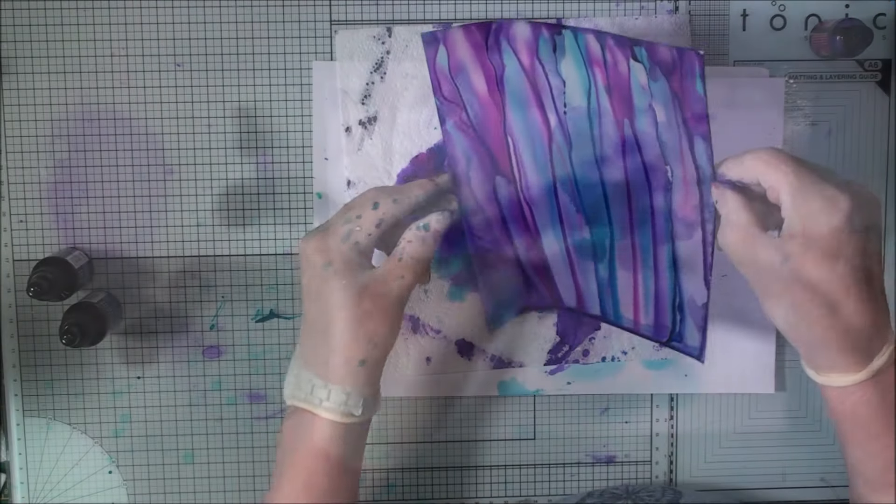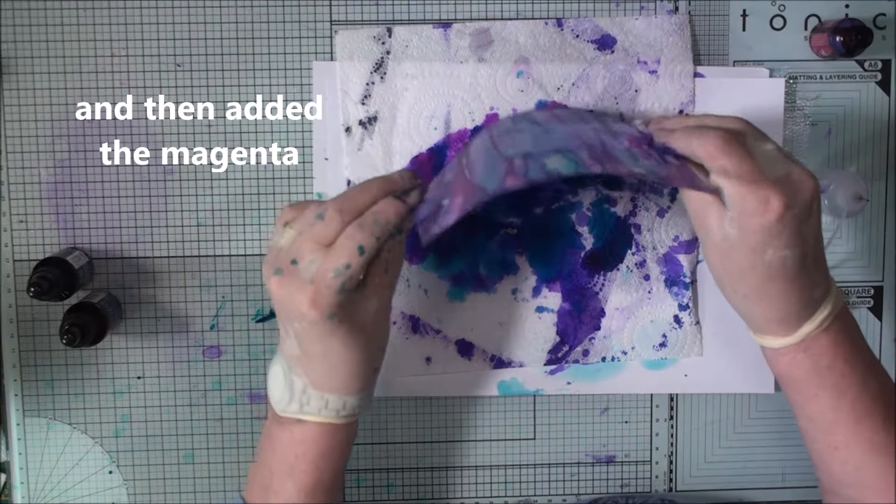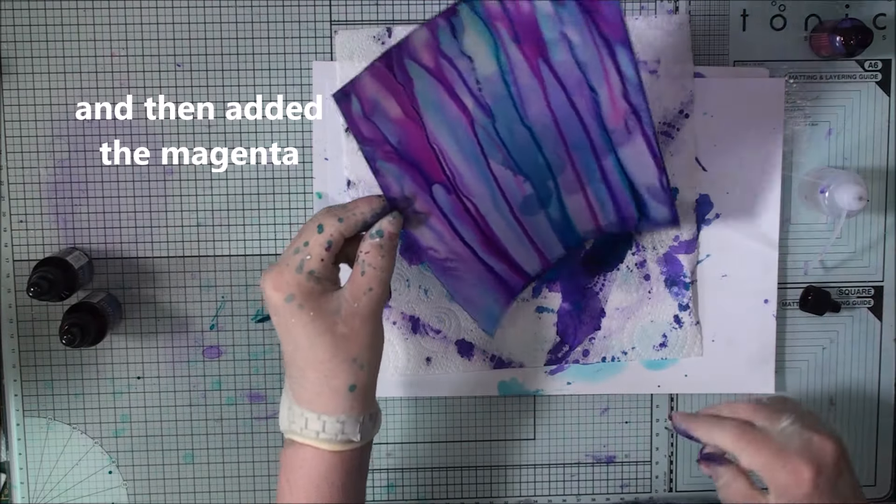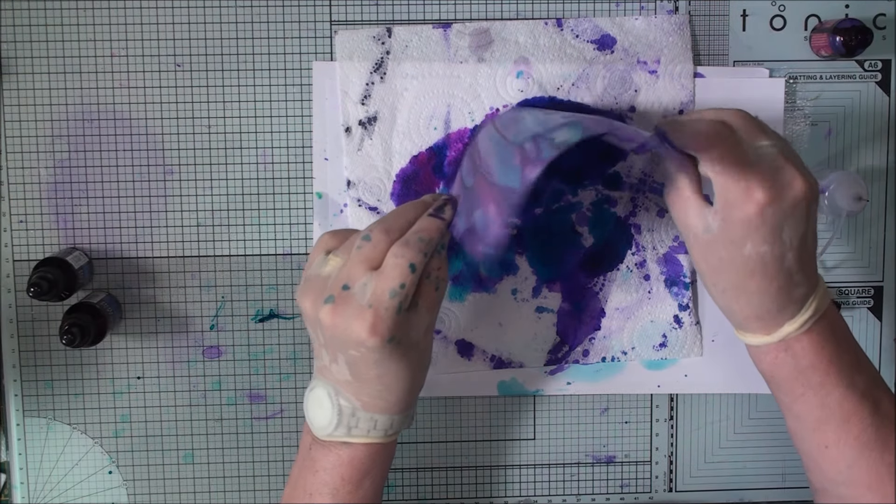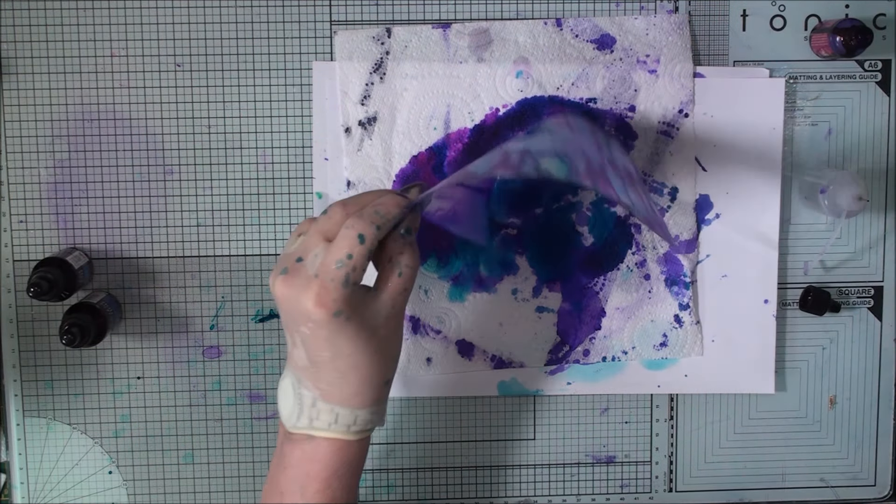Some very deep maroon ink in my stash and I've run that down the side. So we can dry that off now with the heat tool and then we'll carry on with the other side.